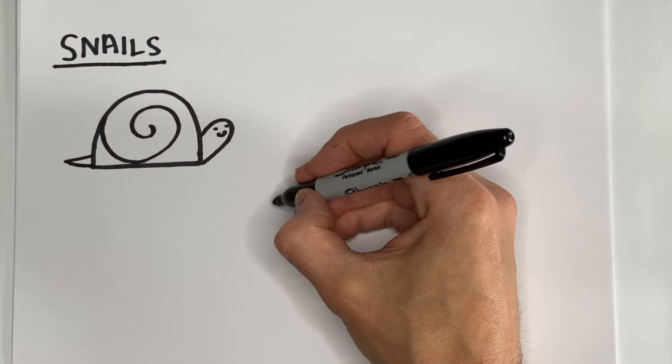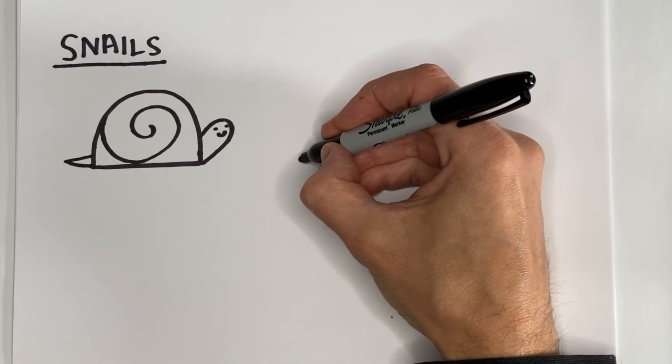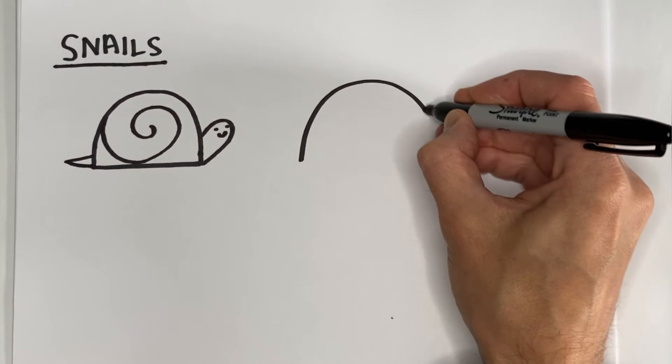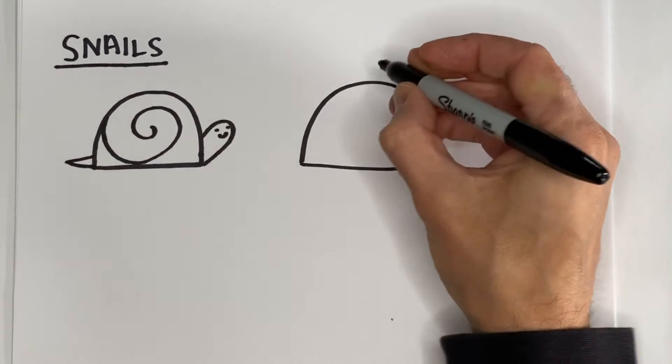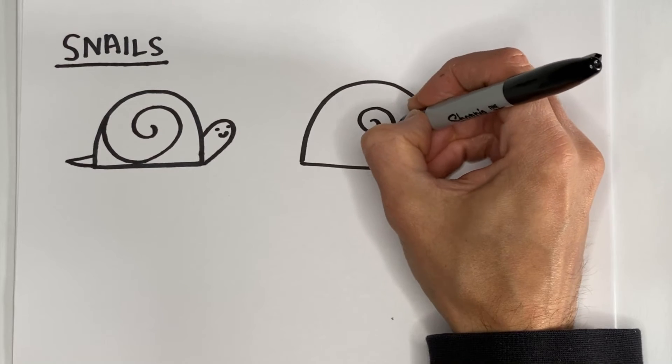For some variations on this, we can start with that big upside-down letter U. Close it off. Let's do a swirl the other way.